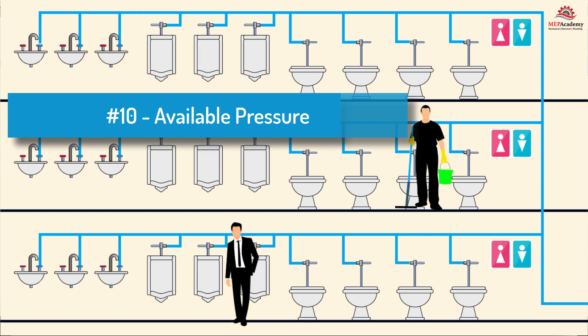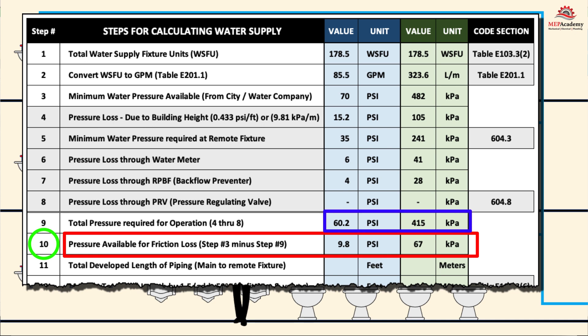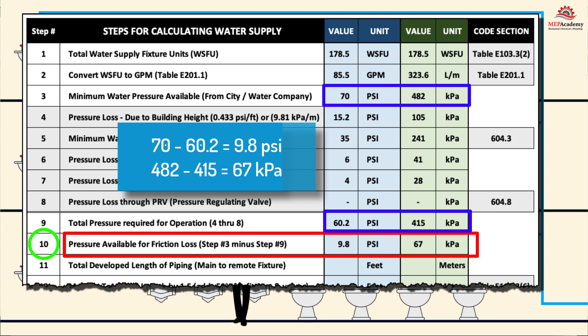Step 10: Pressure Available for Friction Loss. Subtract all the losses from Step 9 from the minimum available pressure in Step 3. If the available pressure is 70 PSI or 482 kPa, the calculation is: 70 PSI − 60.2 PSI = 9.8 PSI, or 482 kPa − 450 kPa = 67 kPa. This is the amount of pressure remaining to overcome friction losses in the piping system.